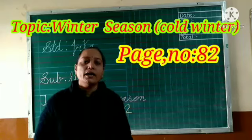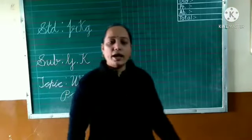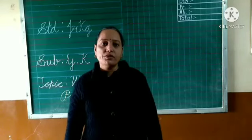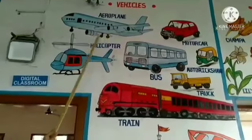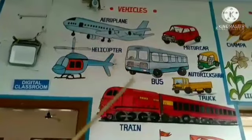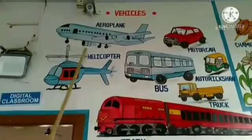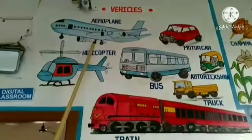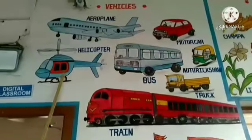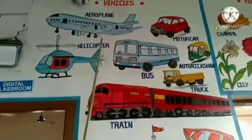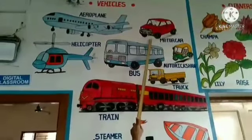Page number 82. Now I revise the previous topic: Transport. What is this? These are all vehicles. Which vehicle is this? Aeroplane.